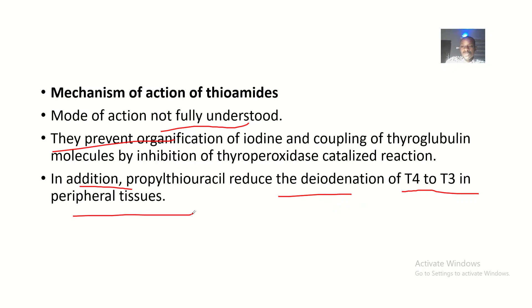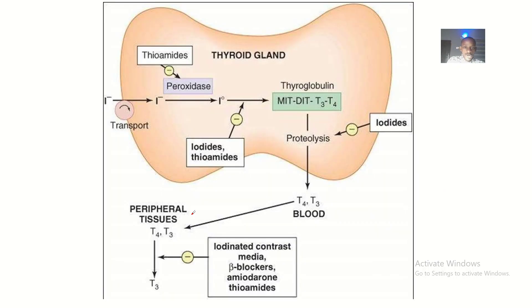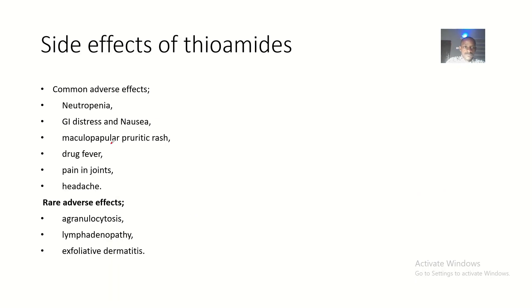In addition, propylthiouracil reduces the deiodination of T4 to T3 in peripheral tissues. T4 is not really active, so one iodine must be removed — that's deiodination — converting it to the active component T3.